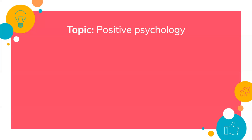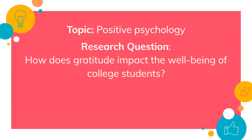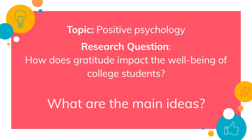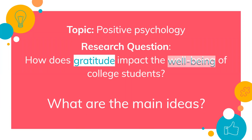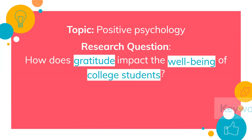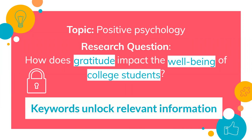Turning your topic into a research question is a great way to hone in on exactly what you're looking for. Continuing with our previous example, we're going to use the question: How does gratitude impact the well-being of college students? From this question, you need to pull out the main ideas or main concepts so that we can begin to search for information on the topic. Hopefully, you said gratitude, well-being, and college students. Keywords are critical to unlocking information.